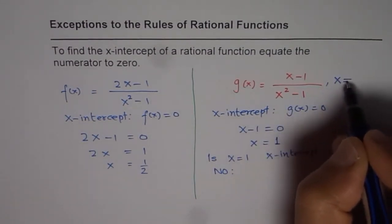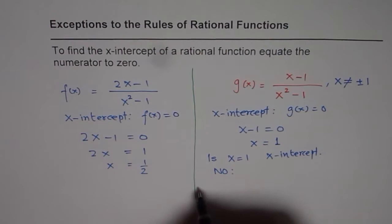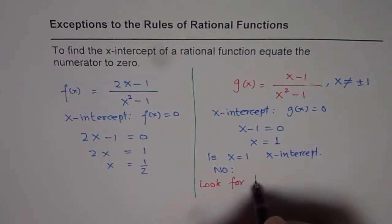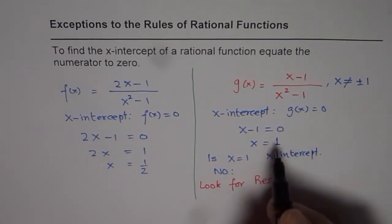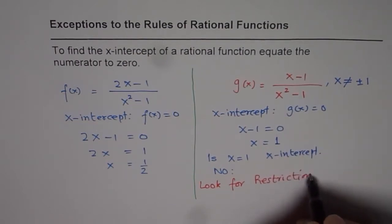The restriction is that x cannot be equal to plus or minus 1. So most of the time, when you are calculating x-intercept, look for what? Restrictions. So do not write your x-intercept as calculated if it is amongst the restrictions. That is the caution.